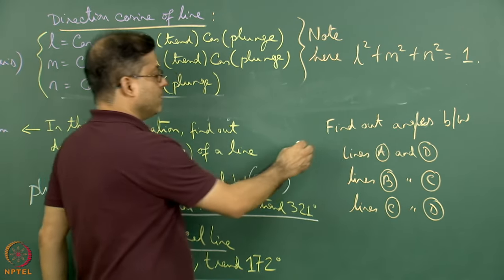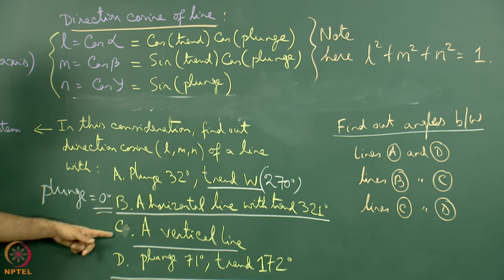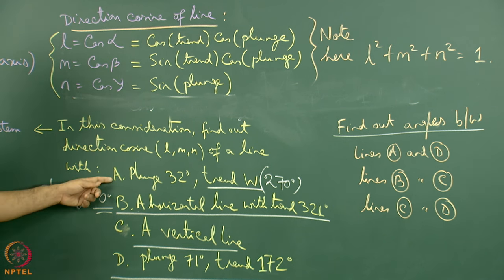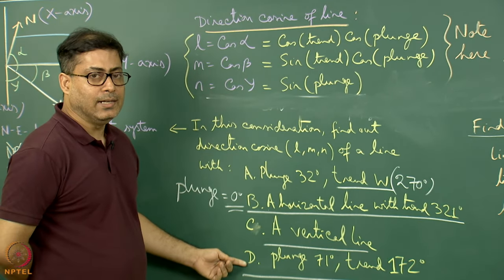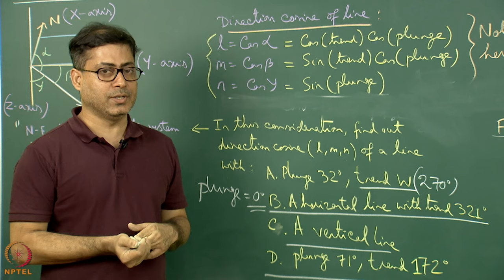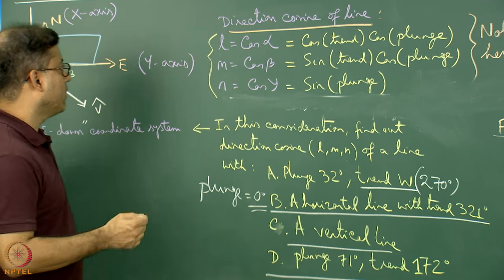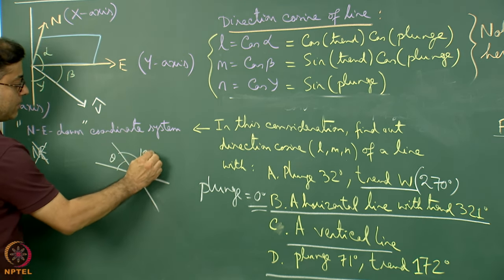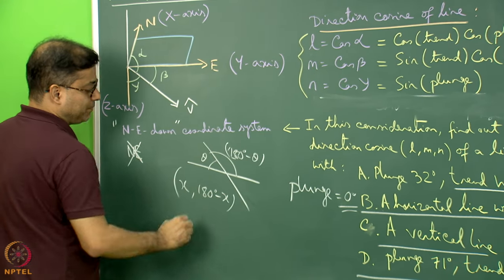The next set of problems: find the angles between lines a and d, lines b and c, and lines c and d. For lines a and d, apply the standard formula from 3D coordinate geometry using direction cosines. There will be two answers — when two lines intersect in space, if one angle is theta, the other is 180° − theta.